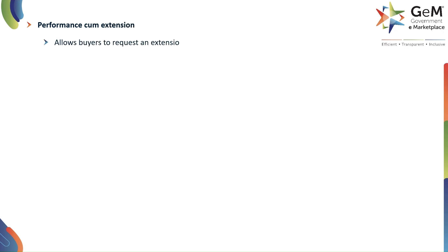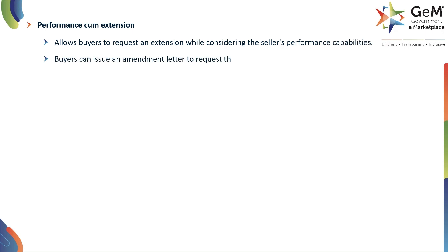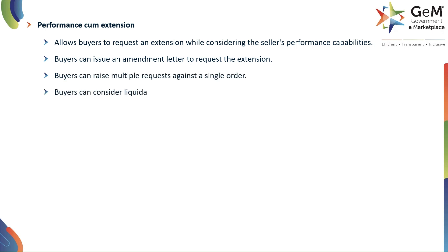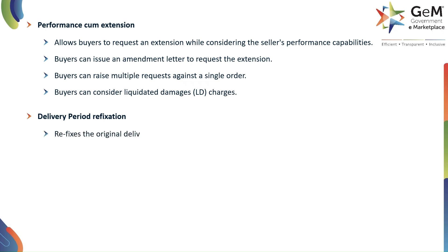Here are some important guidelines. First, performance cum extension allows buyers to request an extension while considering the seller's performance capabilities. Buyers can issue an amendment letter to request the extension. Buyers can raise multiple requests against a single order. Buyers can also consider liquidated damages (LD charges) liability for delivery period refixation.